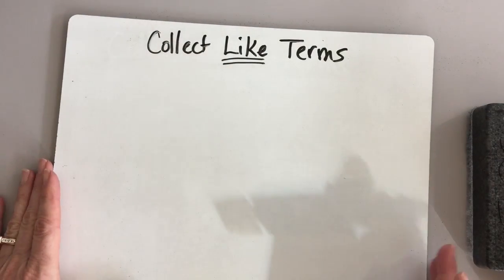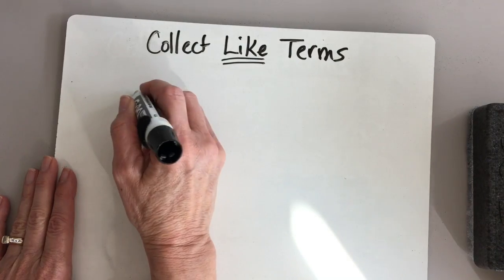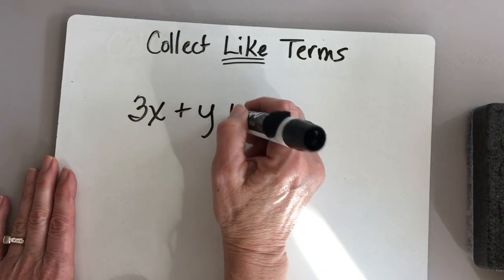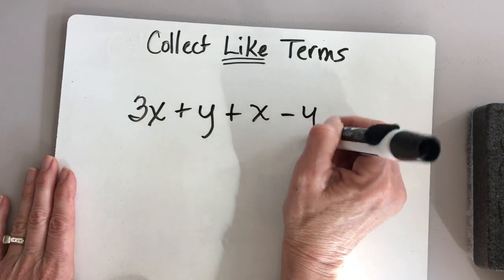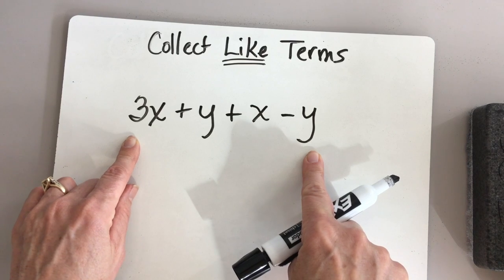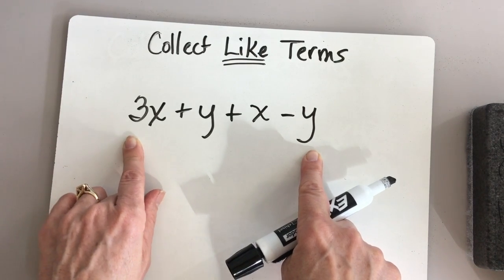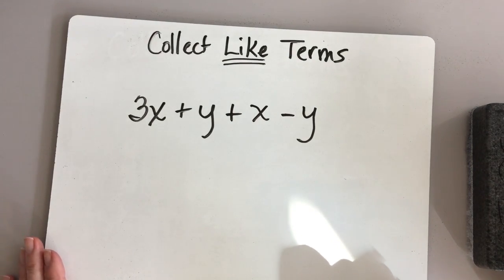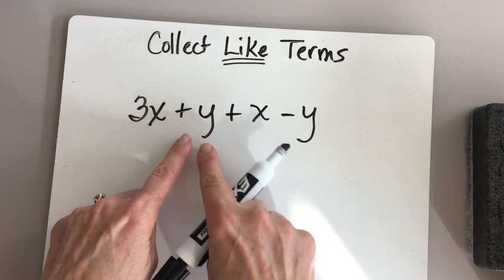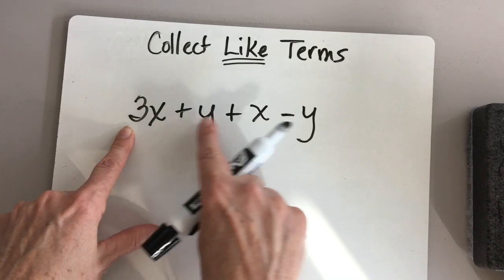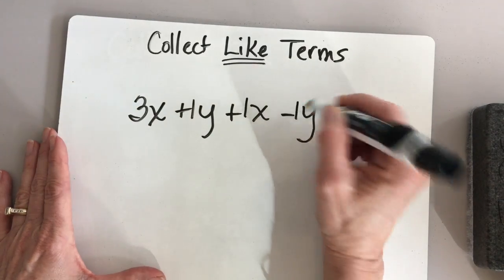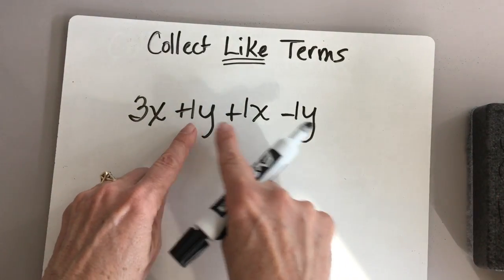Let's do a little bit more complex problem. Let's say that we have 3x plus y plus x minus y. Notice there are four terms here but we can collect the like ones — some are alike and that's the whole purpose of this lesson. Remember, when there is no number in front — like we have a 3 here — it's understood that there's a 1 there. If you want to put a 1 there, or just remember it's a 1, that's fine.